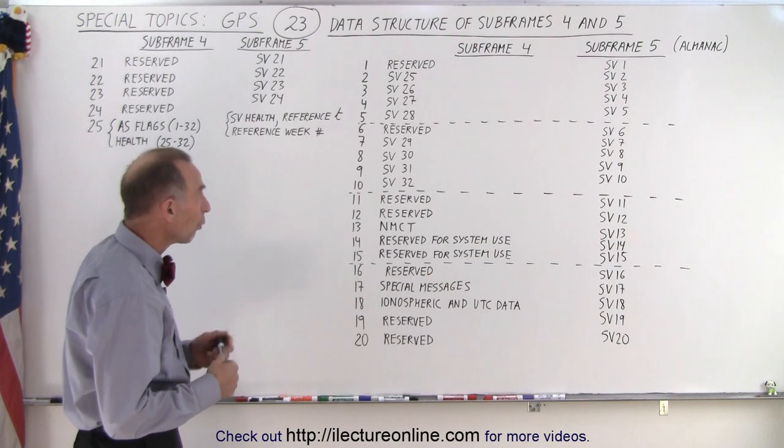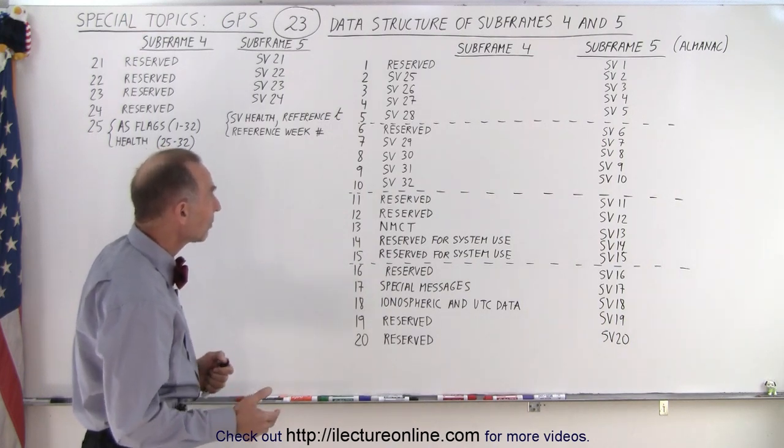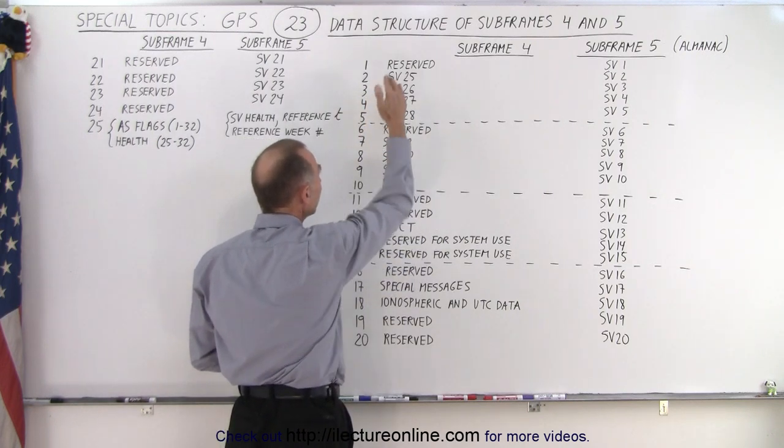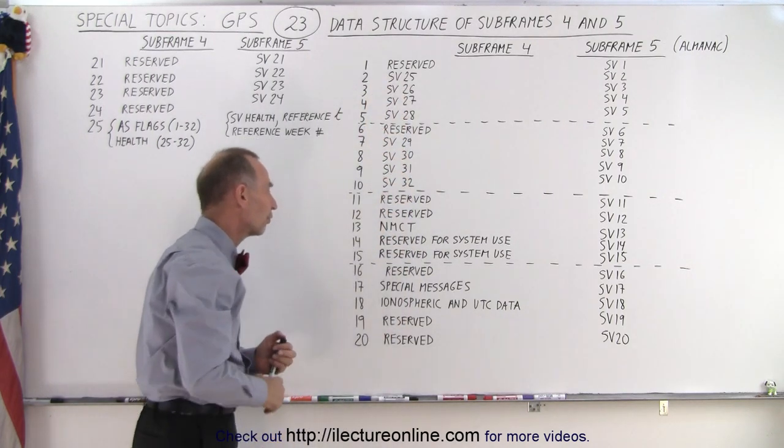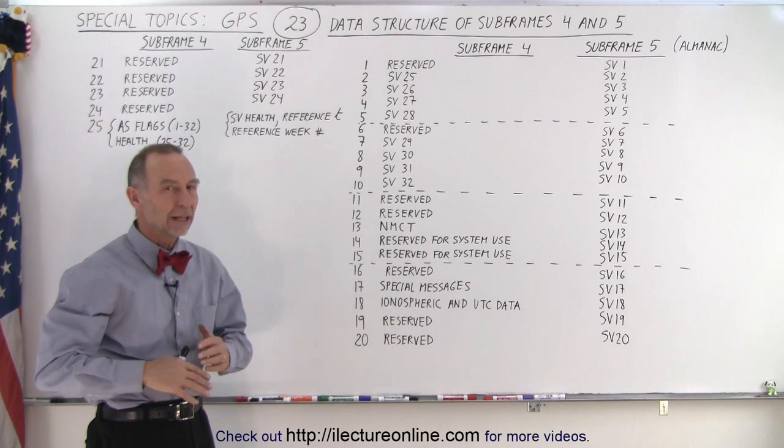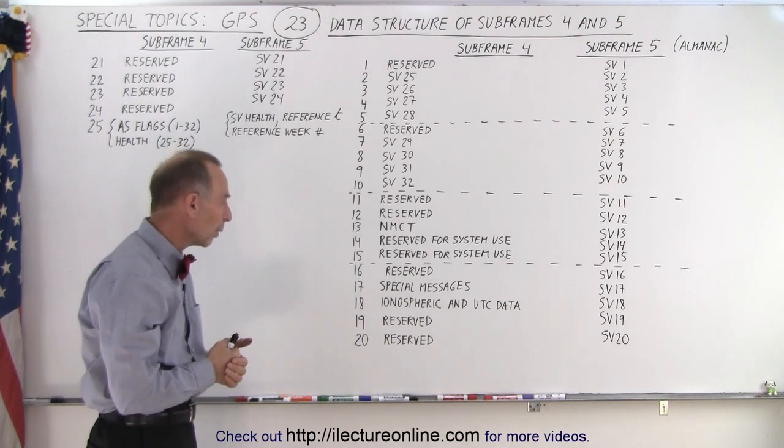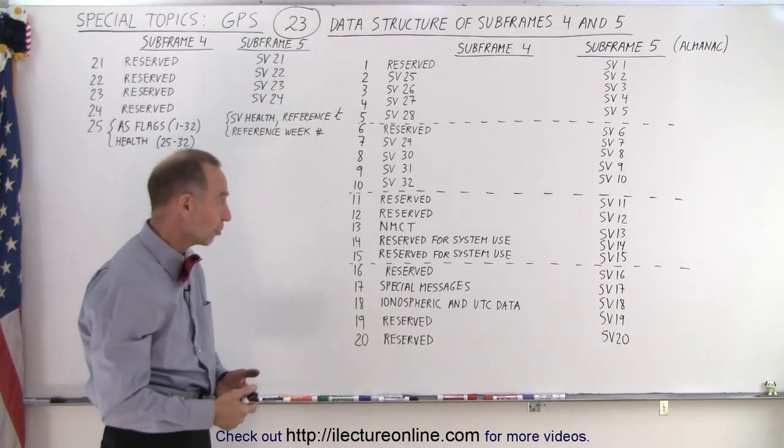Now in subframe 4, we have room for the remaining 8 space vehicles from 25 through 32. And then you can see we have a bunch of reserved locations. So information that is either reserved for other purposes that we're not aware of, or that are simply reserved for the future.